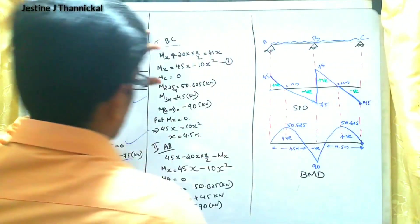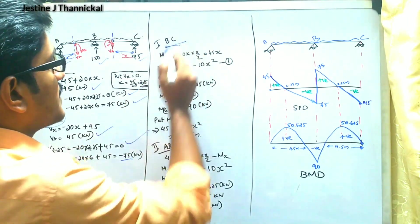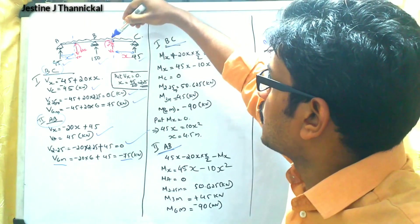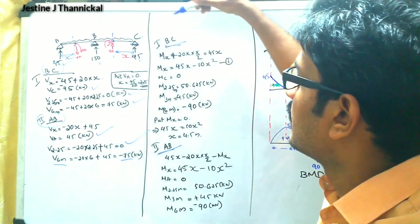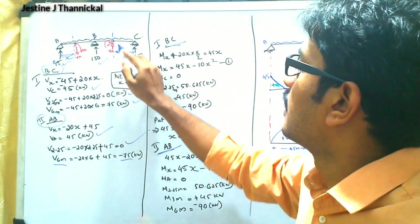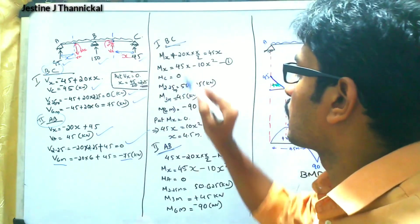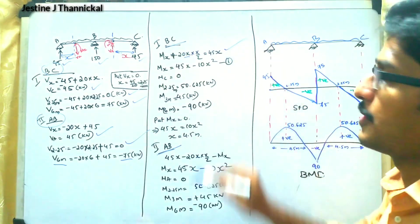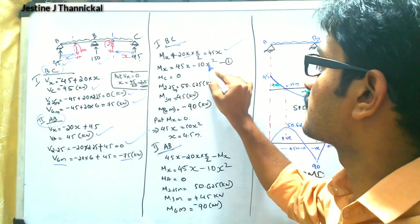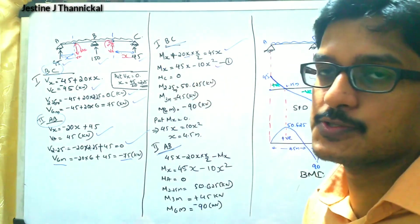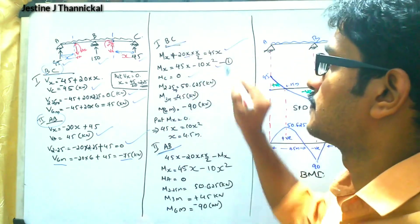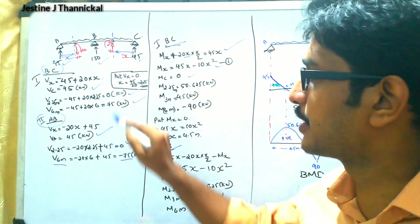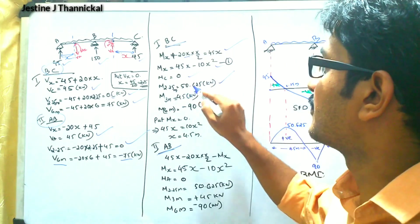Now for bending moments: considering section from joint C, with Mx in the clockwise direction, Mx = 45x − 10x². At x = 0, Mc = 0. At x = 2.25 m (where shear force is zero), the maximum bending moment is 50.625 kN·m.